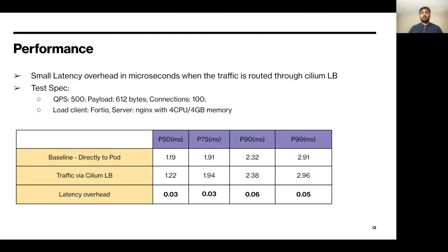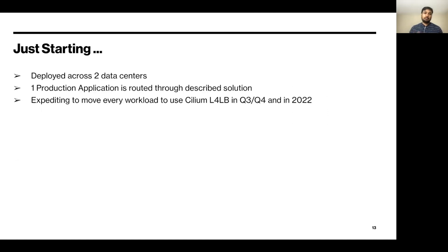We did an extensive performance test to make sure that traffic routed through the Cilium LB doesn't have a performance overhead. We did a number of tests, and one sample test result is shown in the table. We observed only a small latency overhead in microseconds for traffic routed through Cilium LB, which is on par with hardware load balancers. We are just starting with Cilium — we are deployed across two data centers, with one production application routed through this solution, and we are planning to move every workload to the Cilium LB solution in Q3 and Q4.